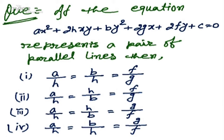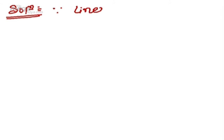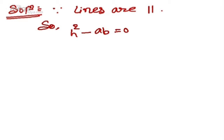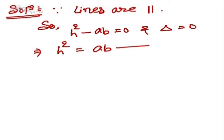This question is based on the basic concept of when this equation represents a pair of lines and when it represents a pair of parallel lines. Since lines are parallel, there are two conditions: first, h² - ab = 0, and second, delta = 0. From h² - ab = 0, it means h² = ab.